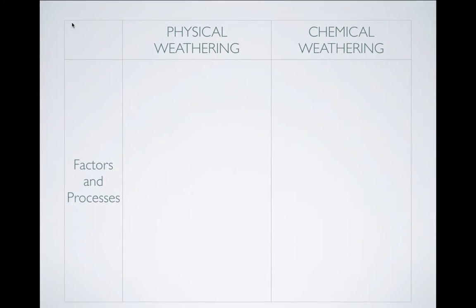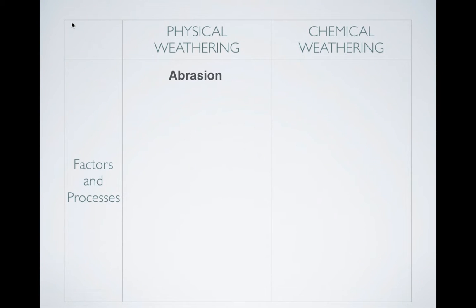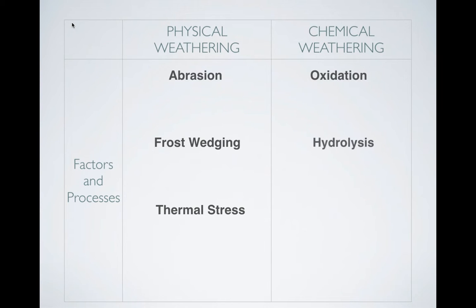Let's look at some physical weathering. There are a bunch of things we're going to cover for physical weathering, so you may want to spread these out in your notes. We have abrasion, frost wedging, and thermal stress — we're going to define each of them. There's going to be a lot of material under abrasion especially. For chemical weathering, we have oxidation, hydrolysis, and carbonation. Let's start with physical weathering and look at abrasion.